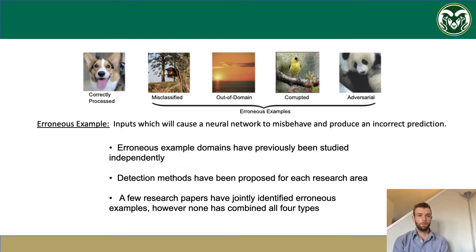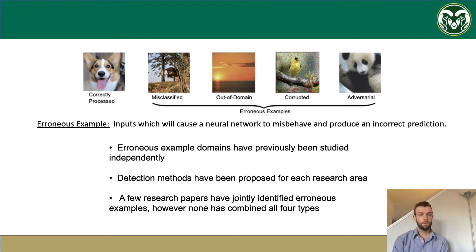In this paper, we look at several different cases when a neural network will misbehave, and title these erroneous examples. A few research papers have jointly identified the four types of erroneous inputs shown above. However, none has combined all four types.